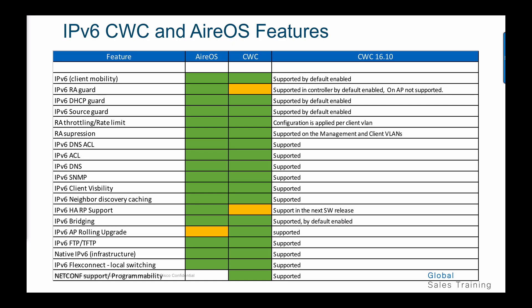As you may know, there are many IPv6 features available on existing legacy ARS controllers. The same features are now ported into the new Cisco wireless controller. Among those features are IPv6 client mobility, IPv6 RA guard, IPv6 DHCP guard, source guard, RA throttling, and RA suppressions.